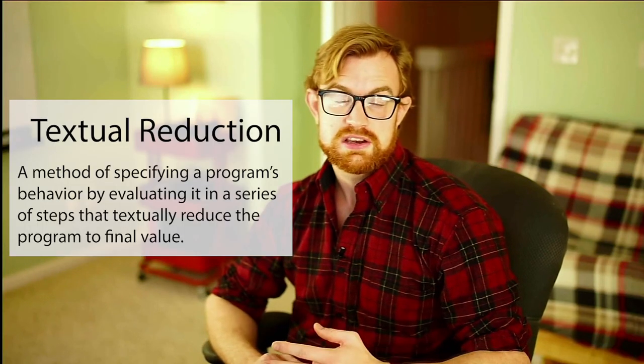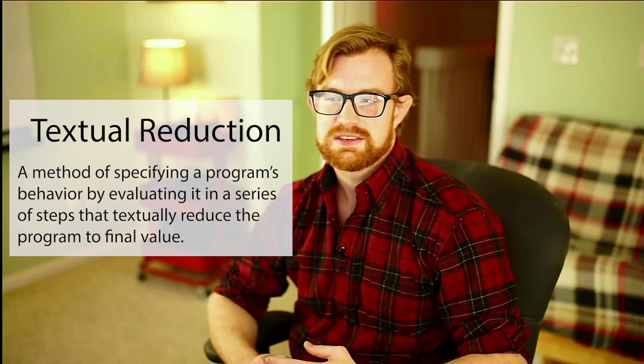In this lecture we're going to take our first step towards understanding the semantics of programs and give you a useful mental model for how programs execute in the computer. This model is called textual reduction semantics. Textual reduction is a way of specifying how programs execute by describing how to textually reduce a program via a series of steps. This style of semantics has a rich history and is traditionally called term rewriting. However, you don't really need to know any of the formal background to understand this lecture. We're going to give a semi-formal account of how term rewriting works with a bunch of examples, and we're going to continue working through some of those examples in class with exercises.